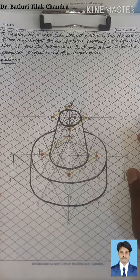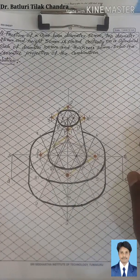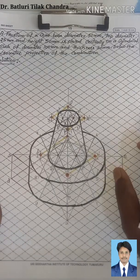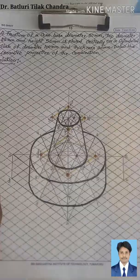This is what is called a frustum of a cone on top of a cylindrical slab. This completes the problem. Thank you.